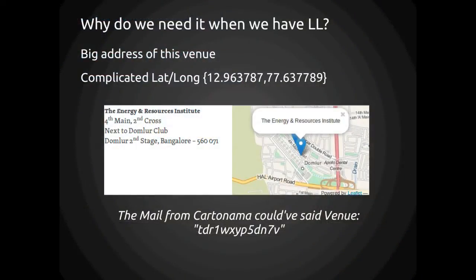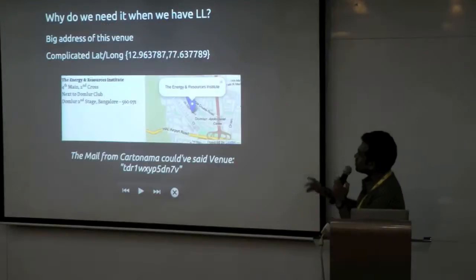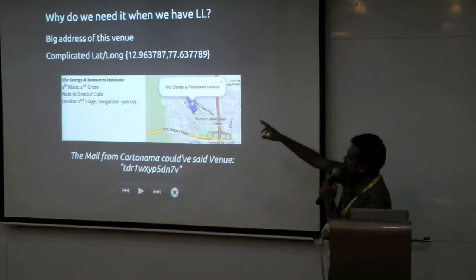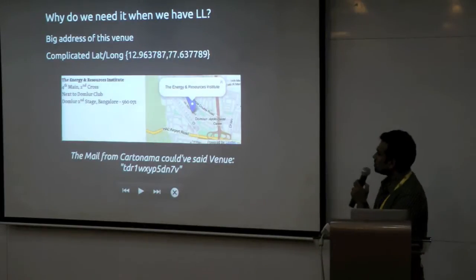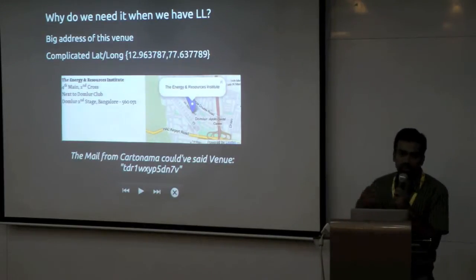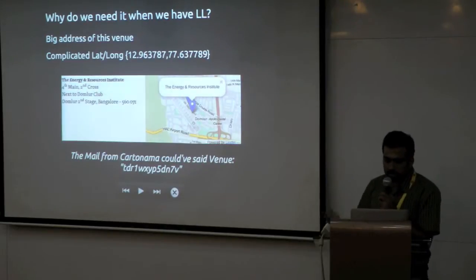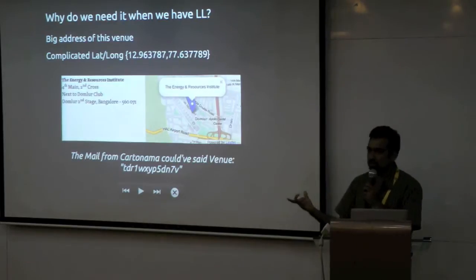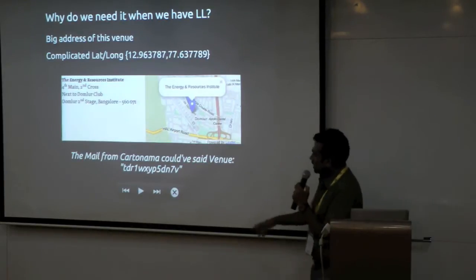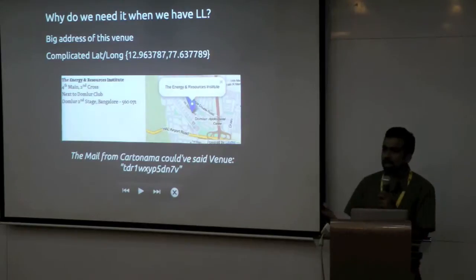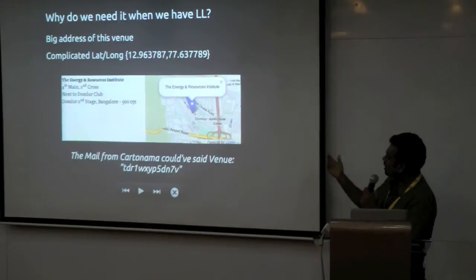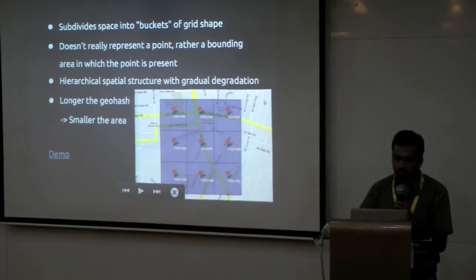Why do we need it when we have lat-long? The basic problem is that we usually have big addresses — like for this event, we had such a big address, it's not standard. Lat-long is very difficult to make sense of unless you have a map. Instead, a mail could just say the venue is this particular string, which is 8 or 9 characters. As you increase the string length, accuracy increases, and you can pinpoint to that point.